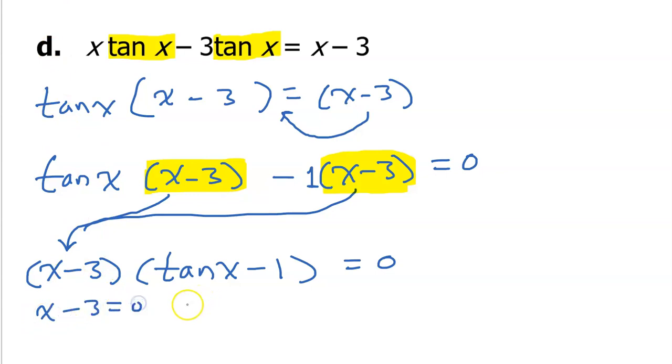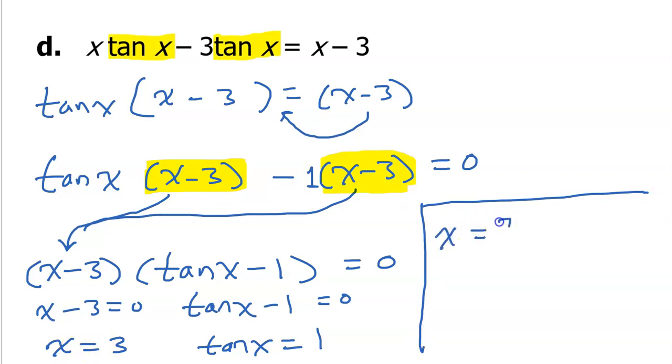Now I can use my zero product property and set each of these equal to 0. So I have x minus 3 equals 0 and tangent x minus 1 equals 0. So I get x equals 3 right away. And over here I get tangent x is equal to 1. So now I'm ready for my full list of solutions. So I already have x equals 3. I'm just going to recopy that.